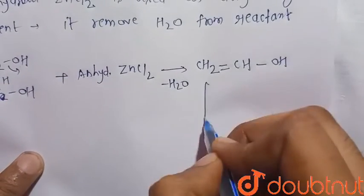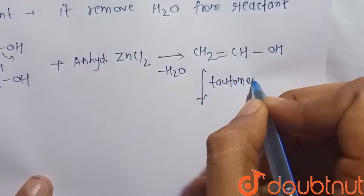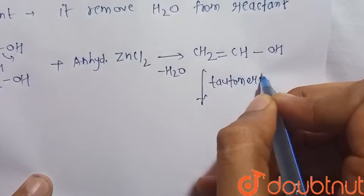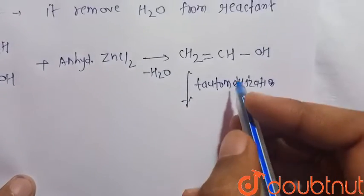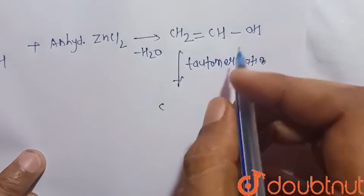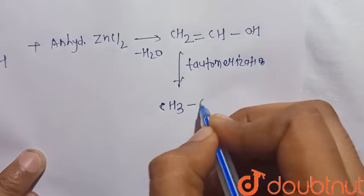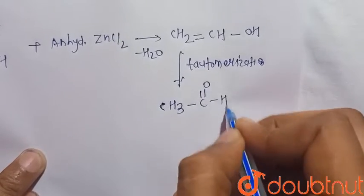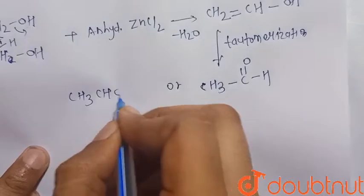So now there is tautomerization that occurs. So there will be formation of, this is the enol form, so it will change into keto form that is CH3CHO, or we can write it in this way, CH3CHO.